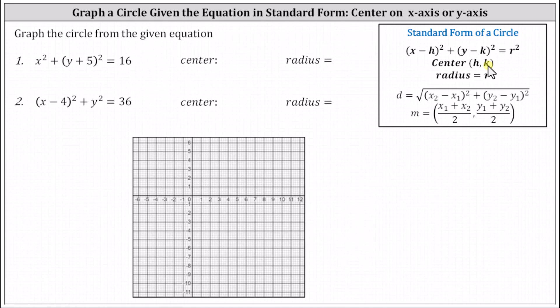Notice the first term in our equation is x squared, which we can write as the square of x minus zero. Because y plus five is equivalent to y minus negative five, we can write the square of y plus five as the square of y minus negative five. On the right, we can write 16 as four squared, because four squared equals 16.